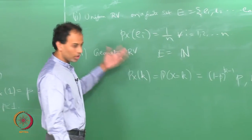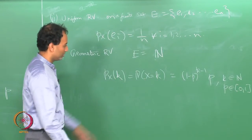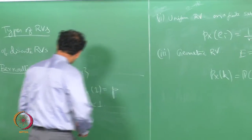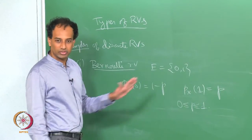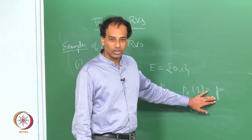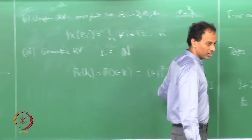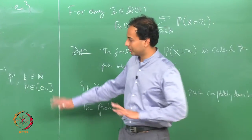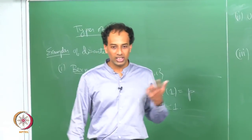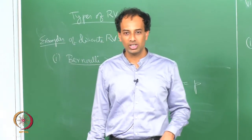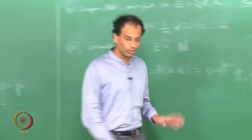A geometric random variable puts a geometric measure on N. The set E is {1, 2, 3, ...} and P_x(k) = (1−p)^(k−1) · p. It has the interpretation that if you have independent Bernoulli trials — tossing a coin independently — this is the probability that you encounter your first head on the k-th toss. That is, it is the distribution of the number of tosses you have to wait until you see a head.